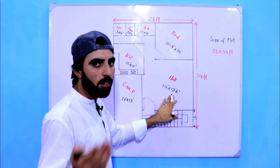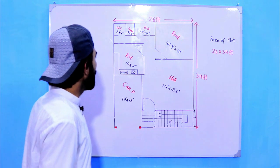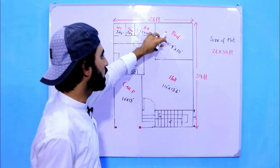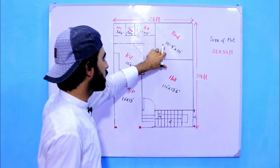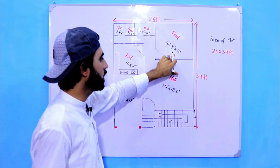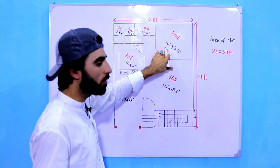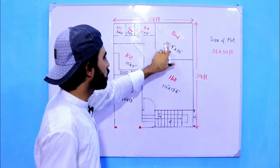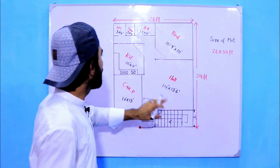Next to this hall or living room, you can see this is a bedroom which size is 10 feet and 9 inches by 10 feet. Its length is 10 feet 9 inches and its width is 10 feet.